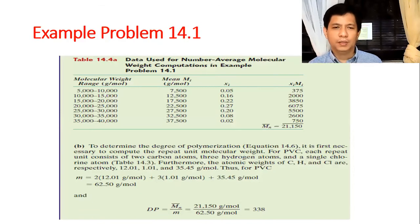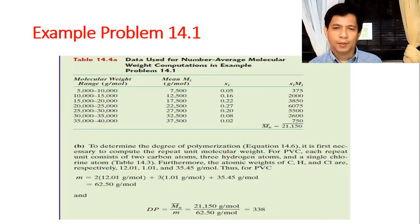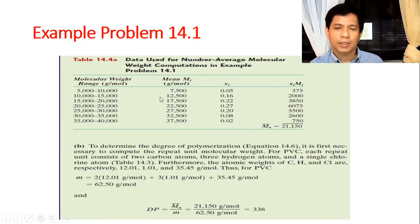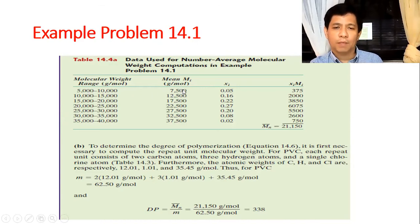Let's try to solve sample problem 14.1, which illustrates the calculation of degree of polymerization. Given mole fractions for each molecular weight range: for the 5,000–10,000 range, the mole fraction is 0.05 (5%). The mean Mᵢ for that range is (5,000+10,000)/2 = 7,500. Multiply: 7,500 × 0.05 = 375. For the 10,000–15,000 range, average is 12,500 and fraction is 0.16, giving 2,000. Add all these contributions to get the average molar mass.